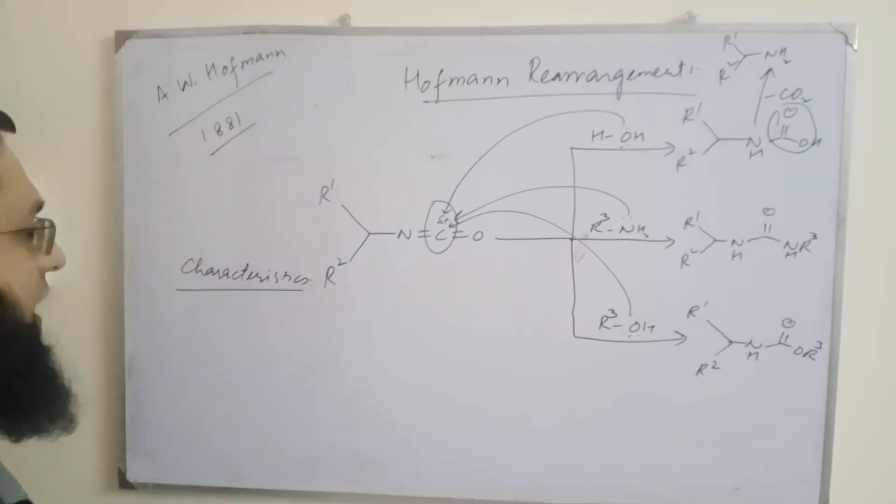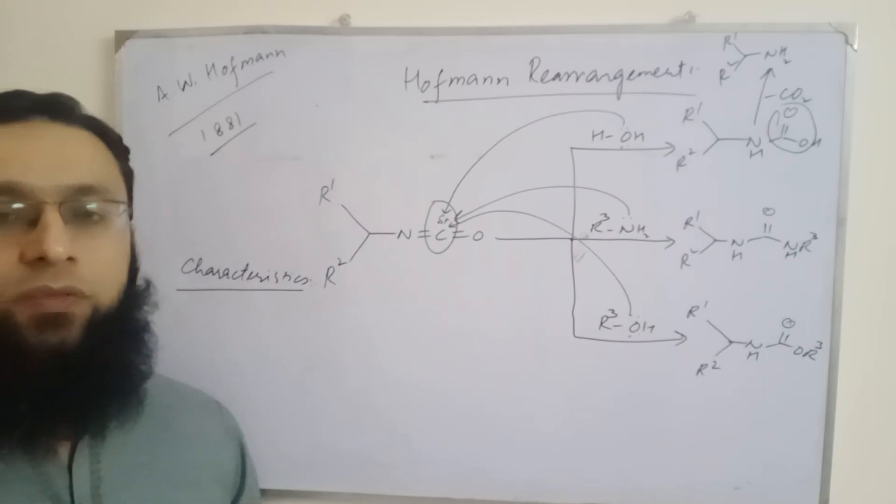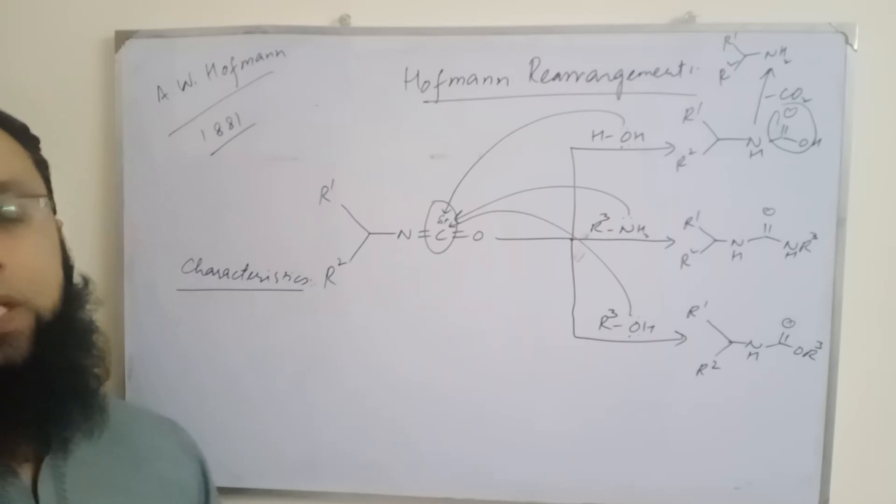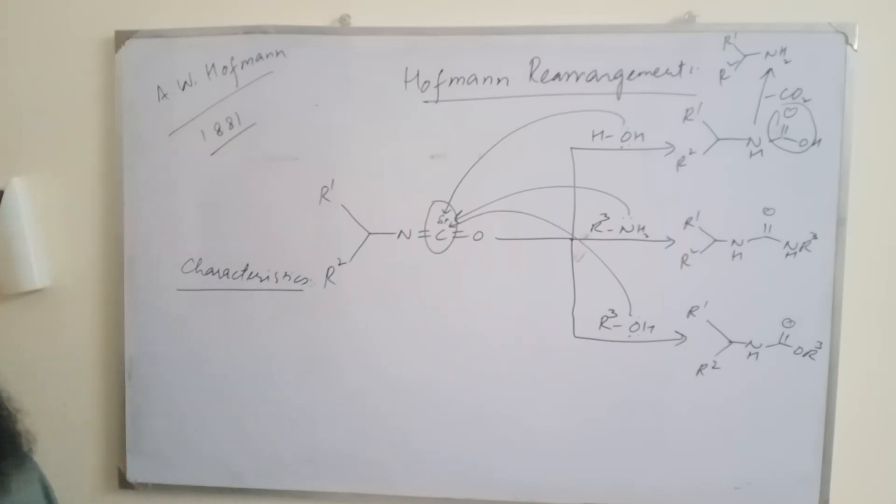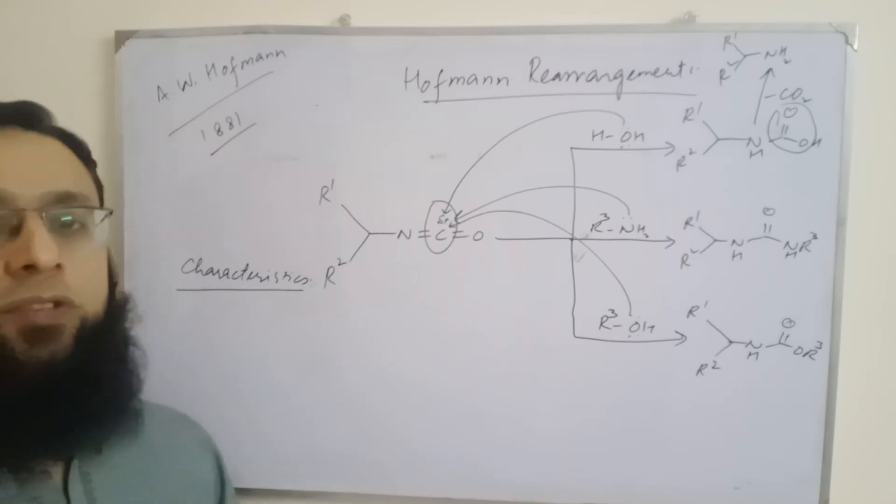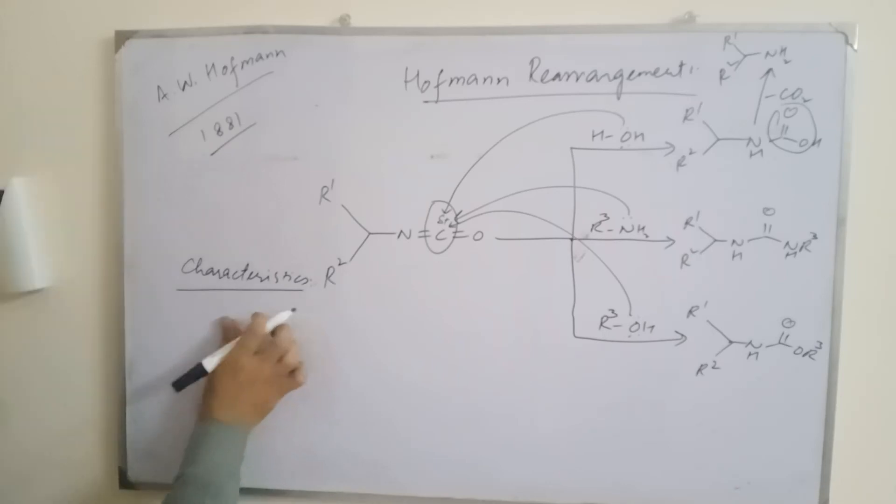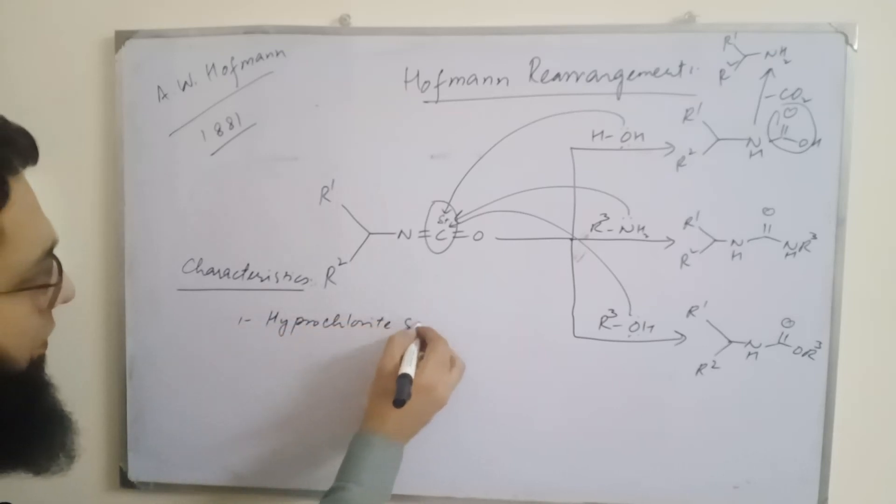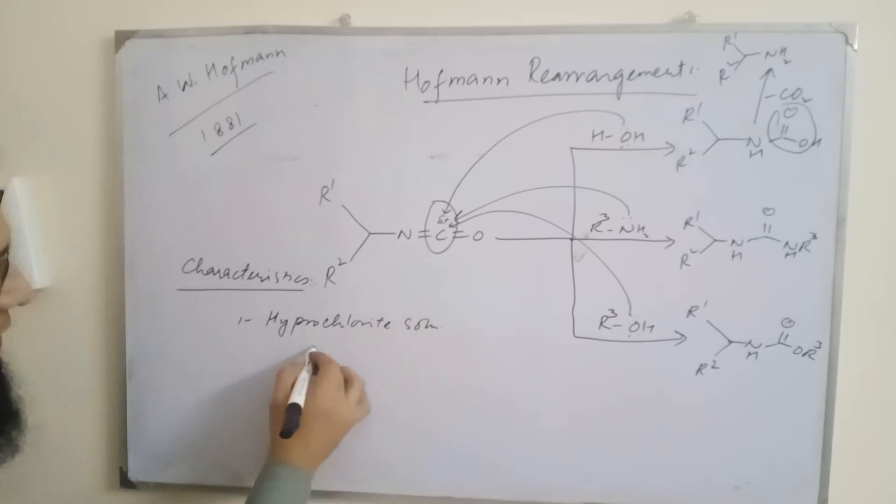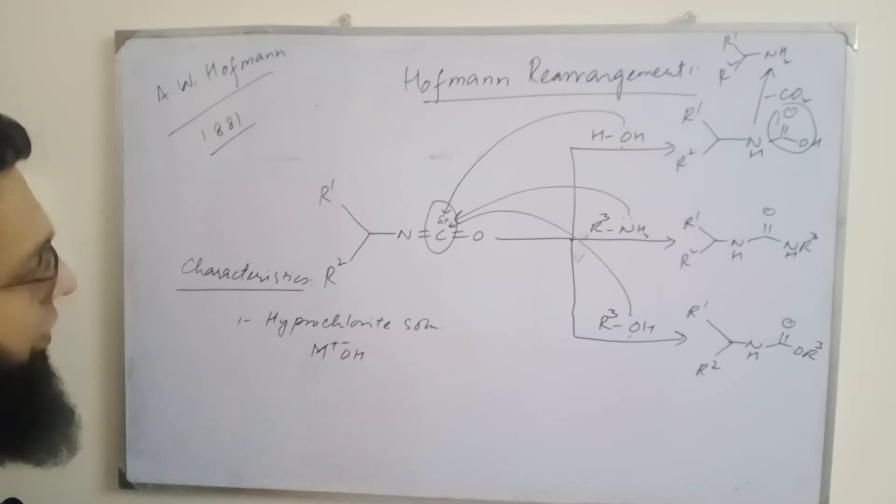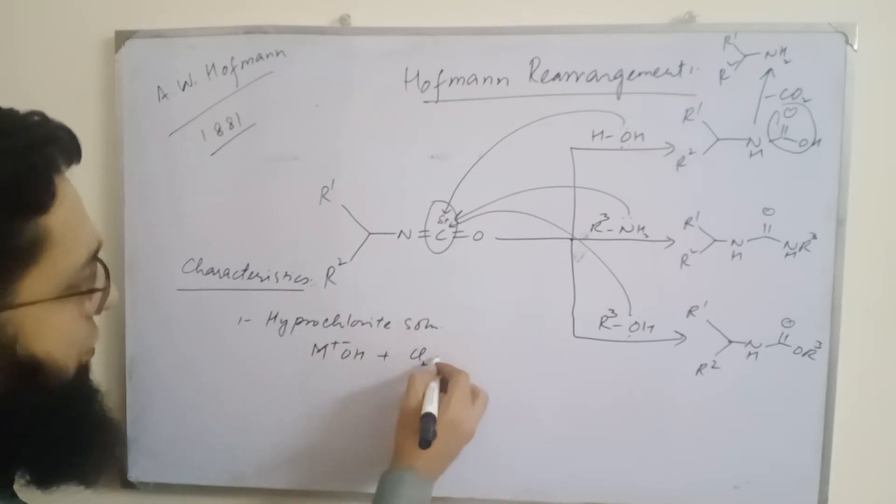In general, the standard procedure for this reaction involves the addition of primary amide to cold aqueous solution of alkali hypohalite solution, and the resulting solution is heated to 70 or 80 degrees Celsius to bring about this rearrangement. First feature is hypochlorite or hypobromite solutions are required, which are formed using potassium hydroxide or sodium hydroxide plus Cl2 or Br2. Both can be used.